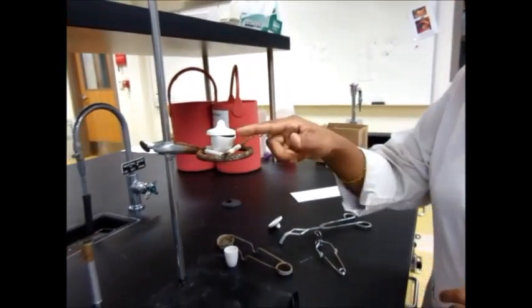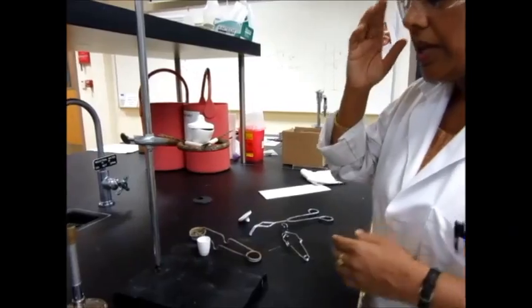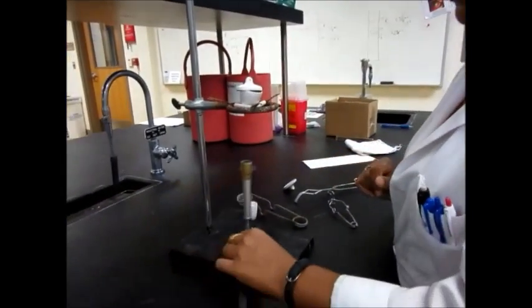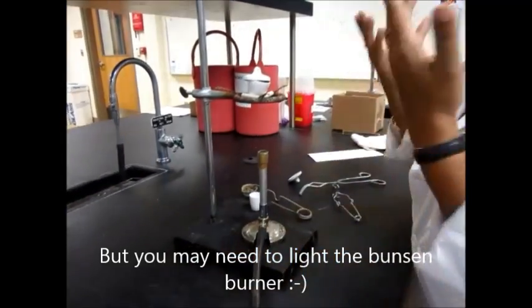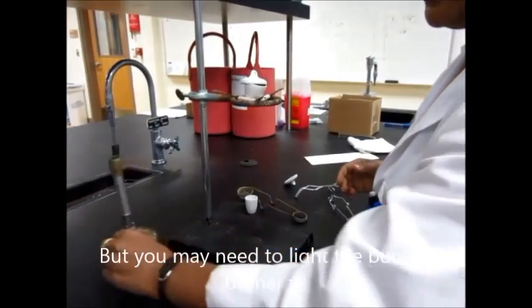And so here's the little open space for your crucible. And then again, I know the Bunsen burner is turned off, but then go ahead and place the Bunsen burner, do the rest of your experiment and you should be good to go.